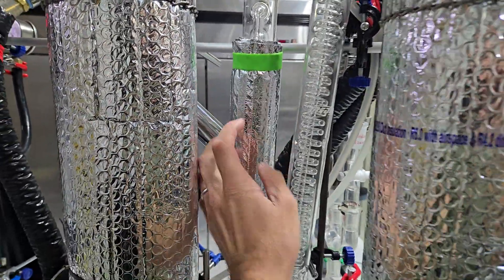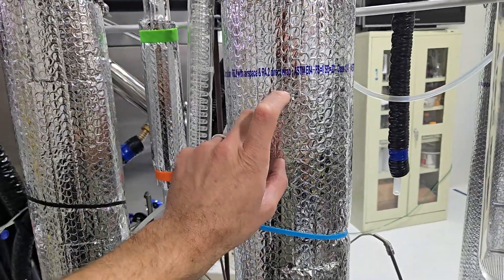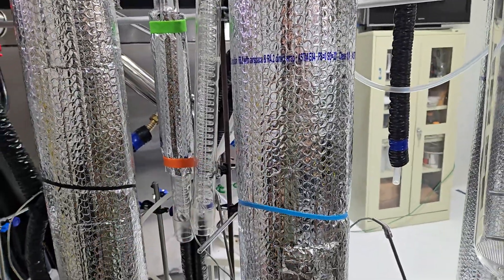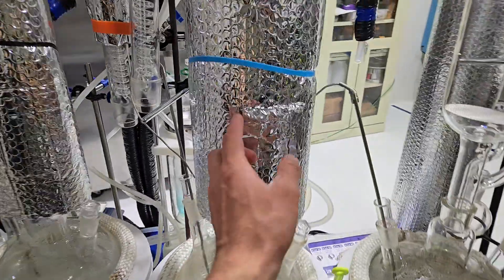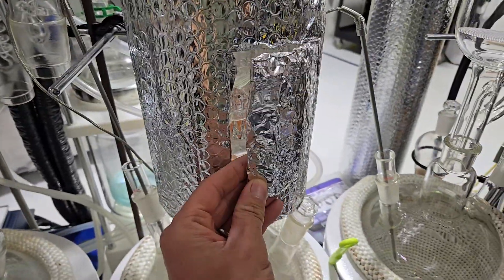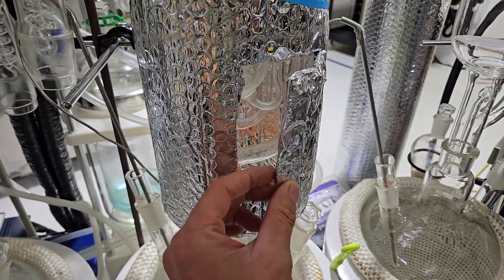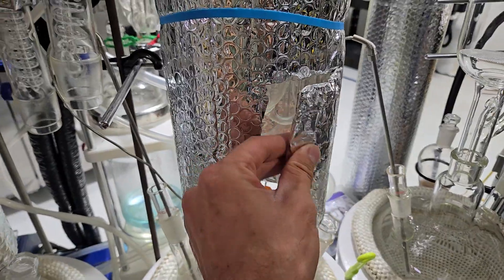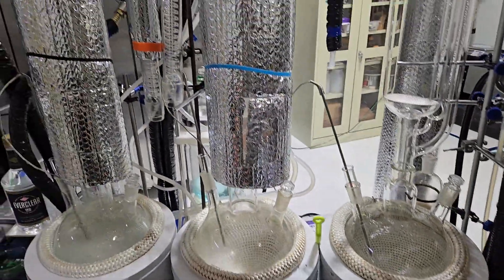You can get this from an HVAC store or like Home Depot, Lowe's. It's just mylar bubble insulation, and then using the aluminized tape to just hold it all together, and then silicone bands.